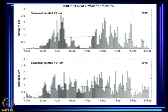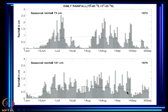The active and weak spells, which we have discussed in great depth, are shown here as rainfall over central India. Notice the long break that occurred in 1972 — that was a drought year — but even in a good monsoon year we have fluctuations between active and weak spells. Active and weak spells are features found in every monsoon season, but breaks of this kind do not occur every season.